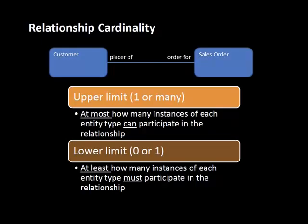In this example we're asking: at most, how many sales orders can a customer have? Most of the time a customer could be allowed to have many, many sales orders — there's practically no limit. So the upper limit may be many, which is the case in this example, or it could be one. The upper limit cannot be zero.